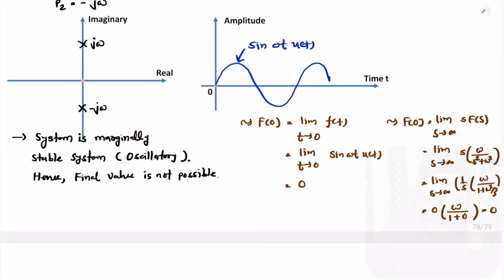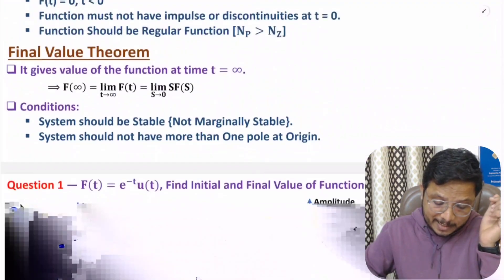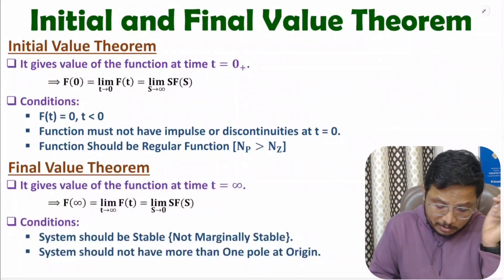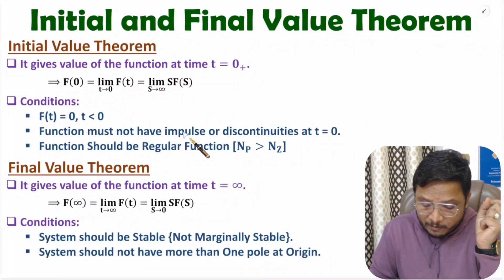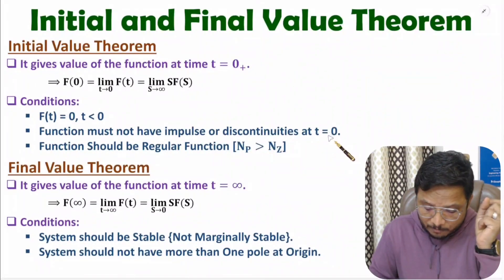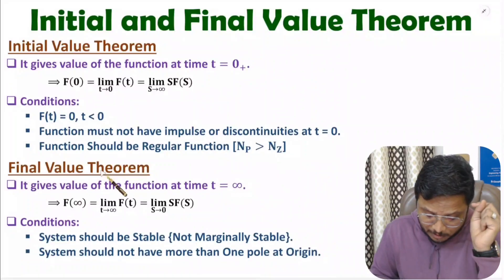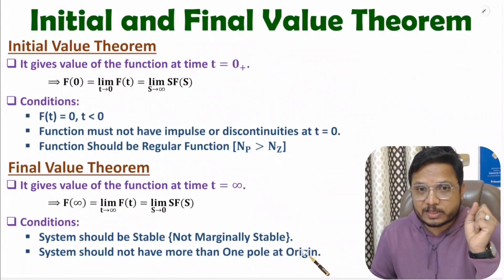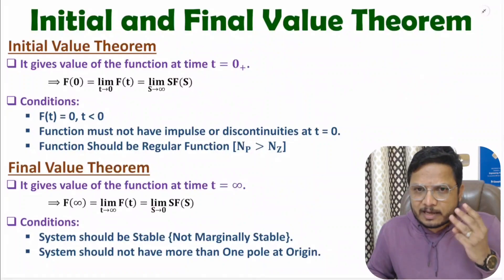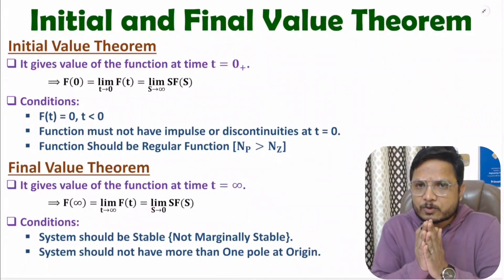That is how one can follow the process to identify initial and final value. Always remember the conditions: for initial value — function should be 0 for t < 0, function should not have impulse or discontinuities at t = 0, and the function should be regular (number of poles greater than number of zeros). For final value — system should be stable and not marginally stable, and there should not be more than one pole at the origin. In the next video, I will solve more questions to further your understanding. Thank you so much for watching.